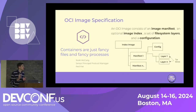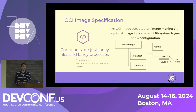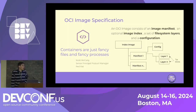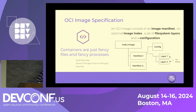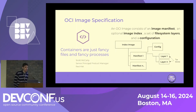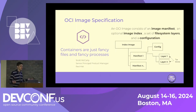As a mentor of mine once told me: containers are just fancy files and processes — just tar balls with some metadata JSON underneath. An OCI image consists of an image manifest, an optional image index, a set of filesystem layers, and a configuration. That's all it takes to get a container running.